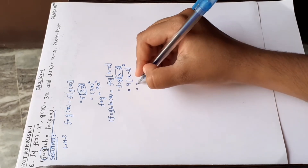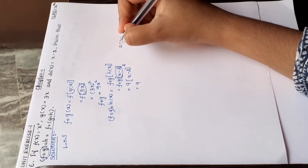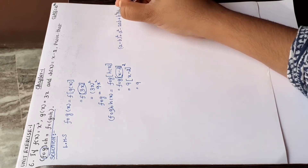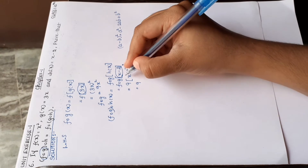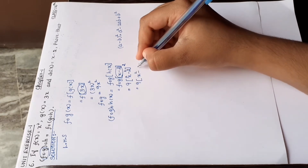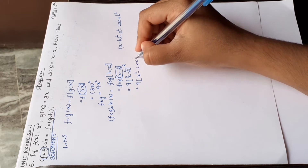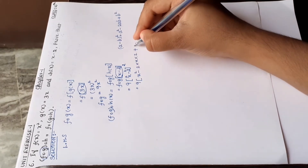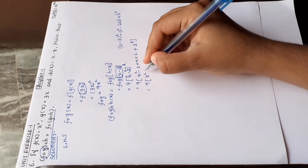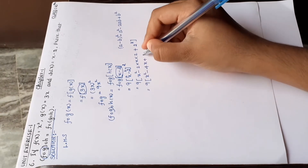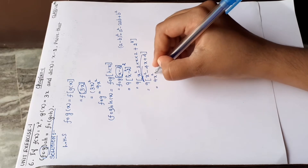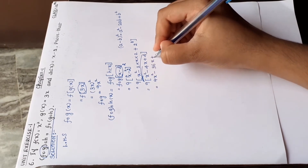So if we solve it, this is of the form a minus b whole square. We know the formula: a minus b whole square equals a square minus 2ab plus b square. So here a equals x and b equals 2. Expanding: x square minus 2 into x into 2 plus 2 square, multiplied by 9. That gives 9 into x square minus 4x plus 4, which equals 9x square minus 36x plus 36.